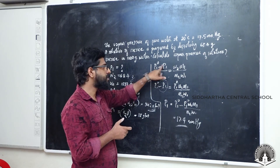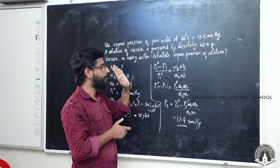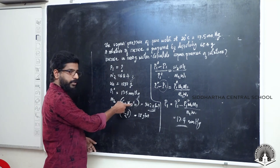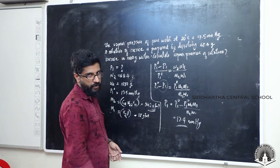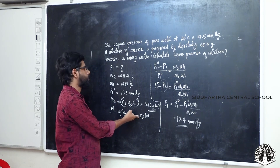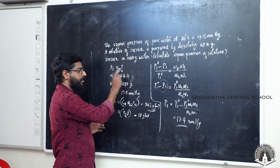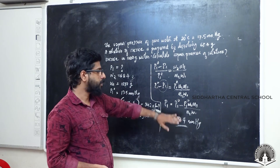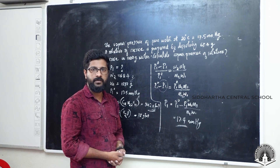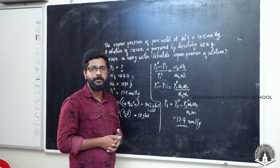P1⁰ is the vapor pressure of the pure solvent, P1 is the vapor pressure of the solution. Here we want to find P1, and P1⁰ is given as 17.5 mmHg. M2 is the molecular mass of the solute — sucrose, C12H22O11 — giving 342 g/mol. M1 is the molecular mass of the solvent — water — giving 18 g/mol. W1 is 1000g and W2 is 16.4g. The answer is approximately 17.4 mmHg. That concludes the topic of relative lowering of vapor pressure and the corresponding problem session.